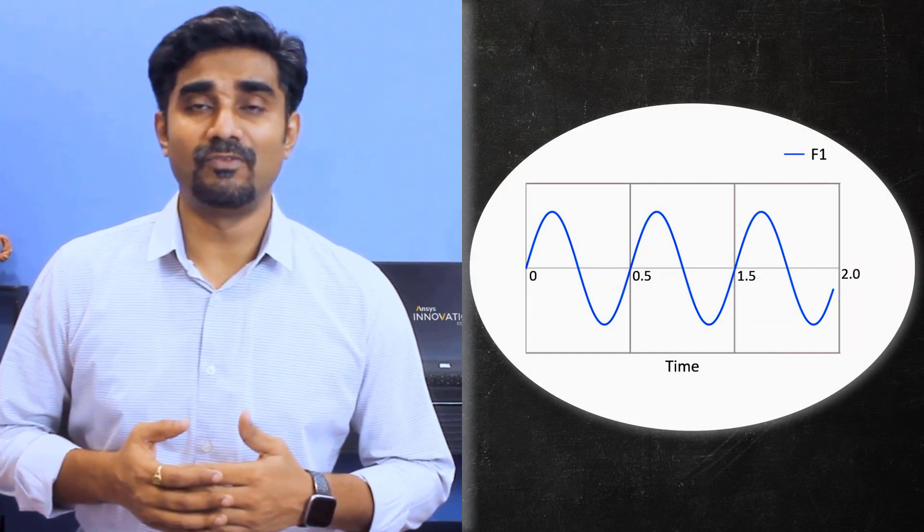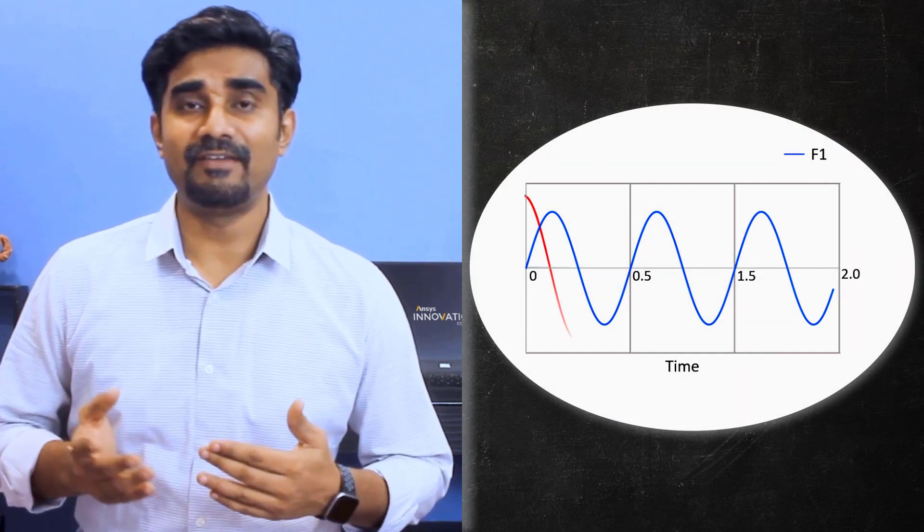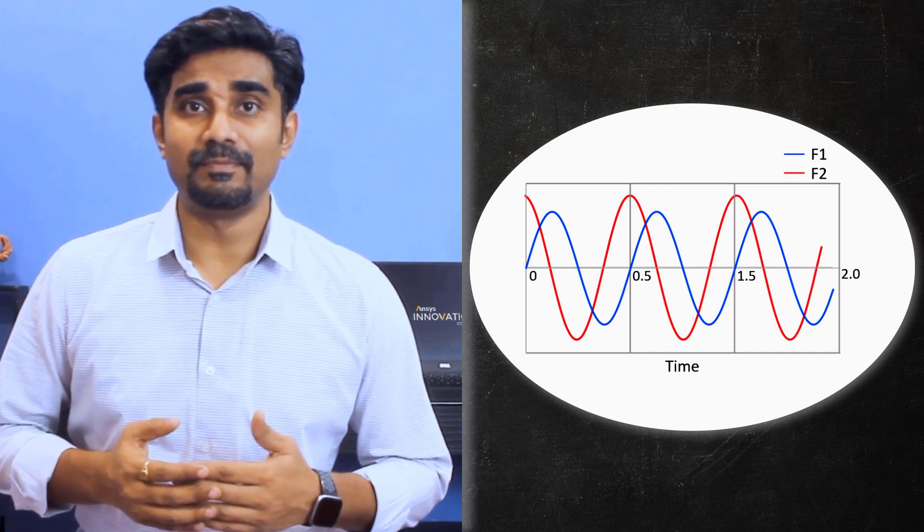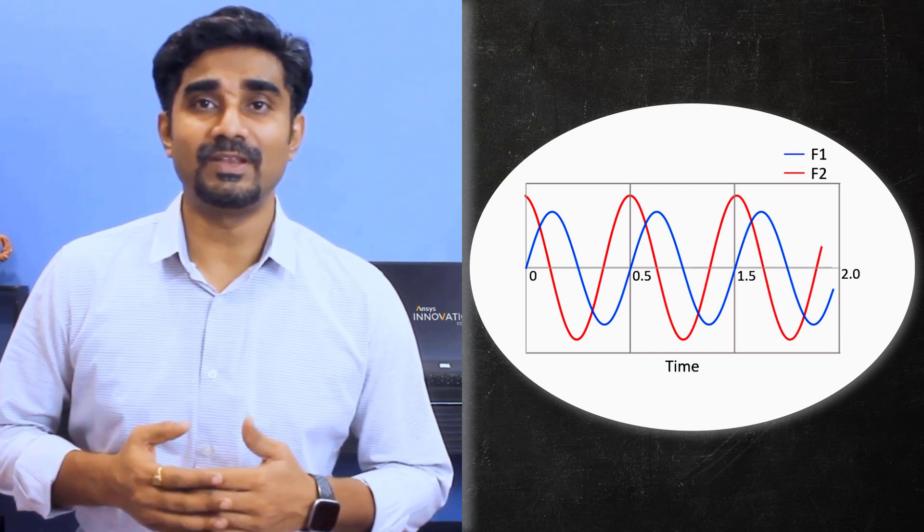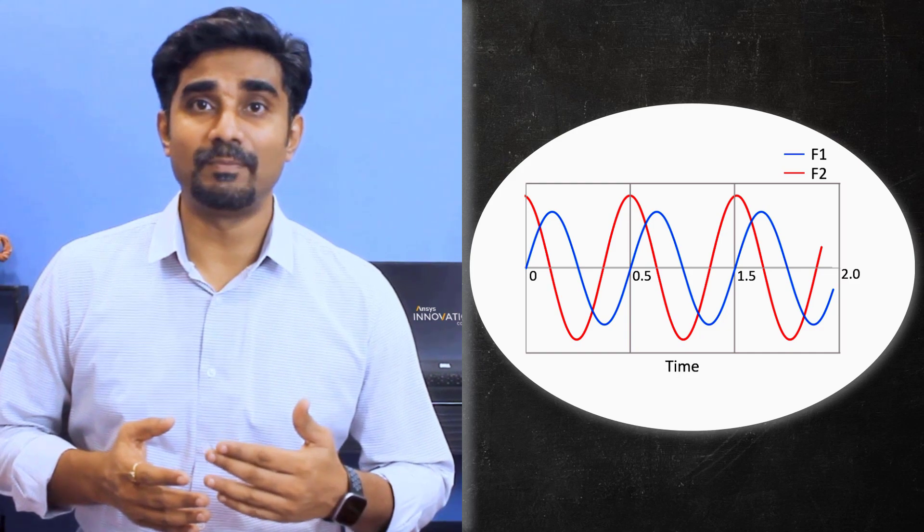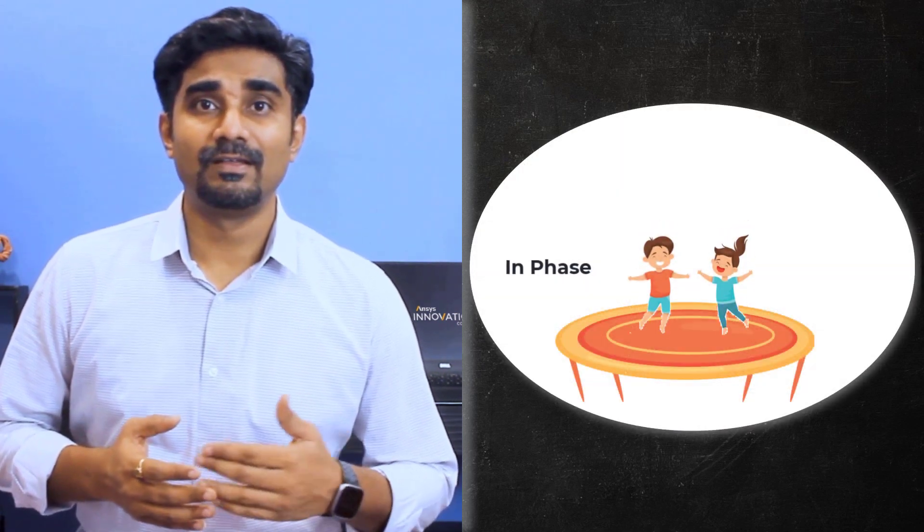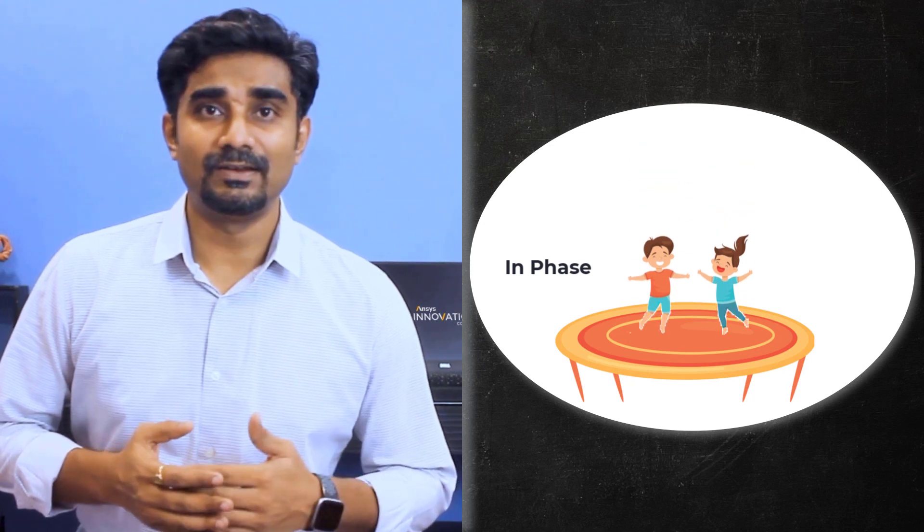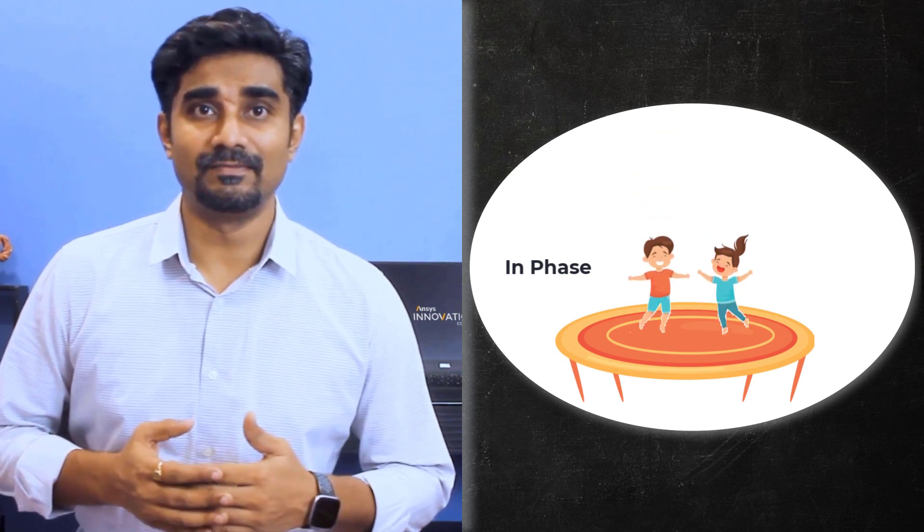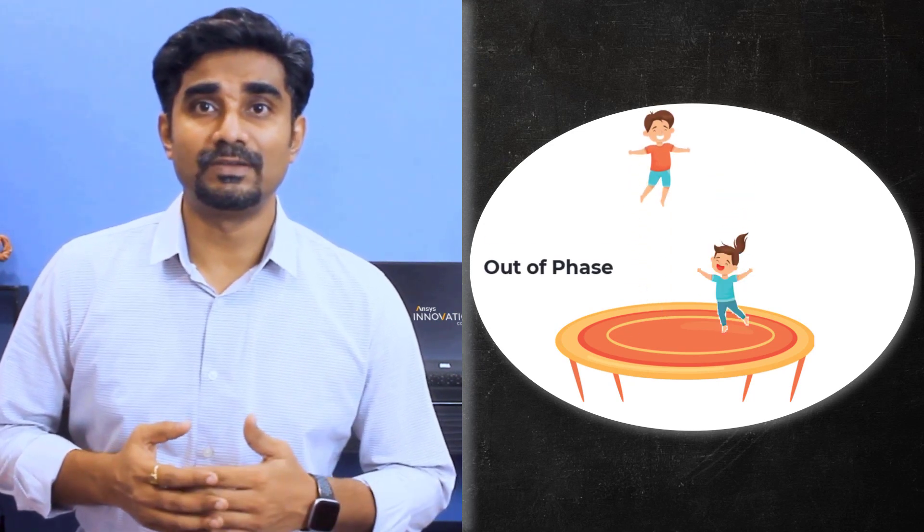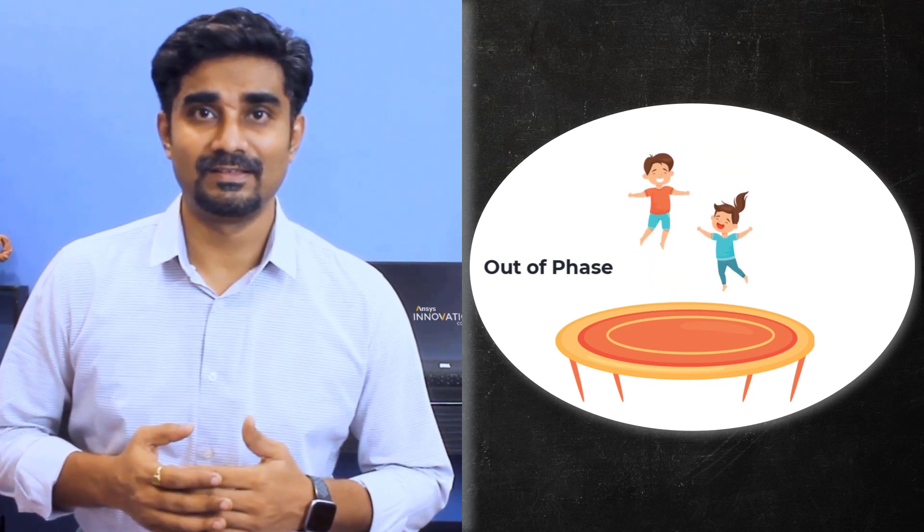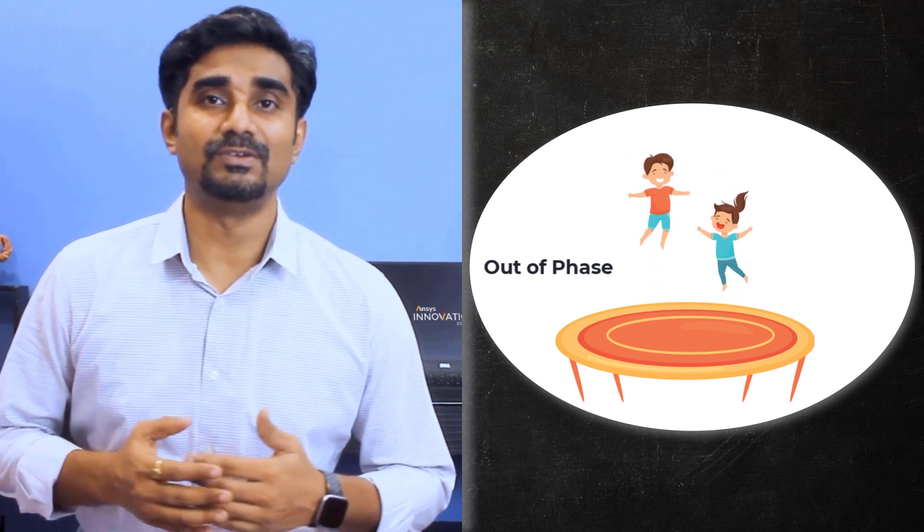Here is an example of two loads f1 and f2 plotted with time. They have the same frequency but different amplitude and phase angle. Here we are looking at two oscillating loads with the same phase angle and then two loads with different phase angles. We call these out-of-phase loads. It is obvious that the structure will respond differently in these two cases.